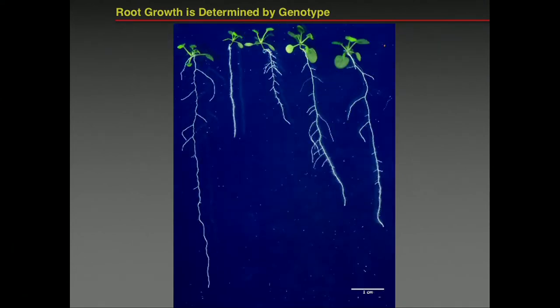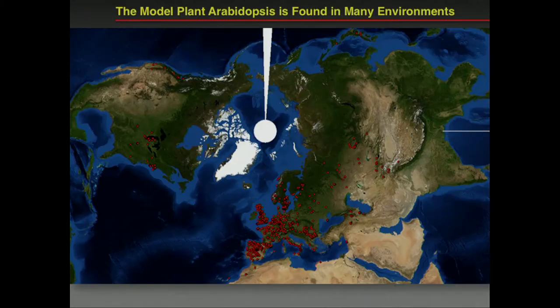The genetic difference between these Arabidopsis strains is not very large — there is an average 0.5% of the genome different between plant strains. Most of it is the same. We don't use only five strains, but rather we take advantage of 60 years of collaborative Arabidopsis science.